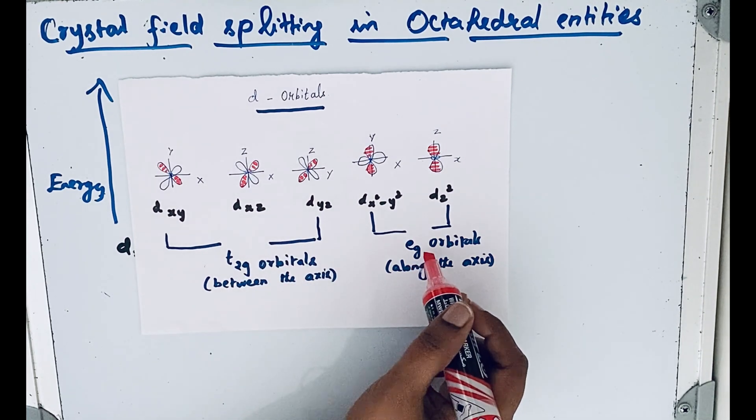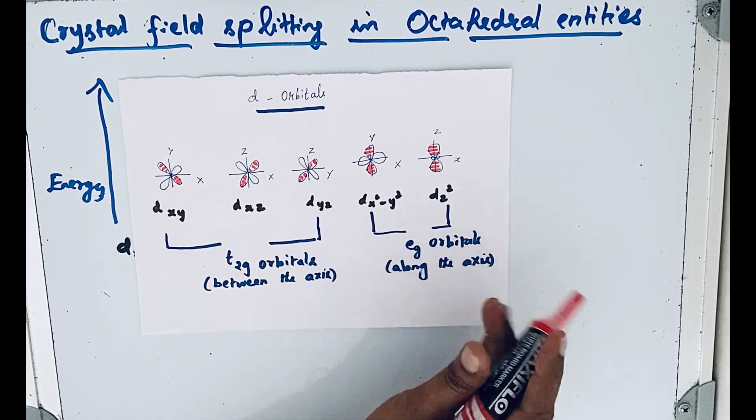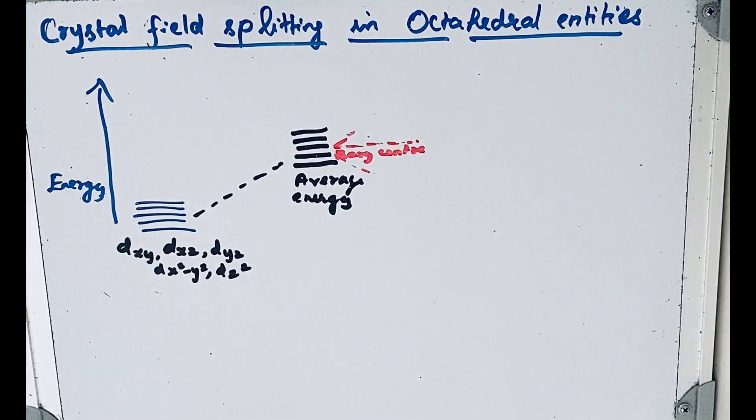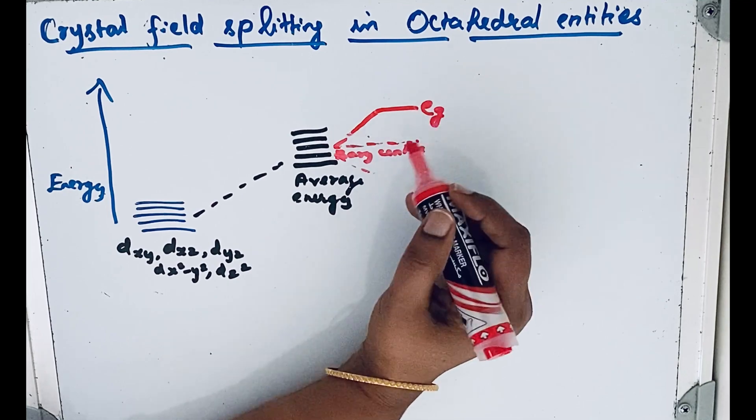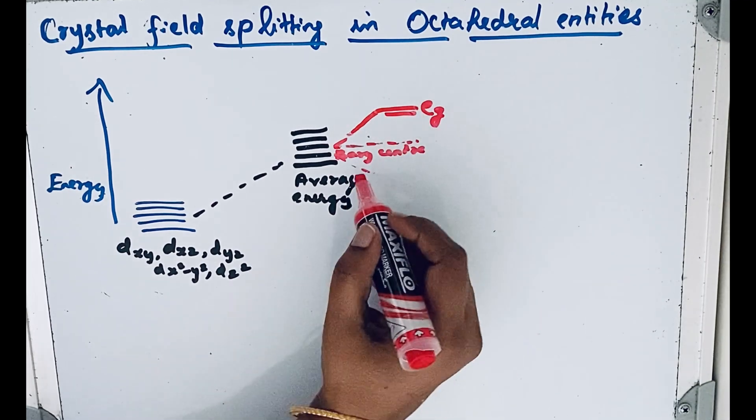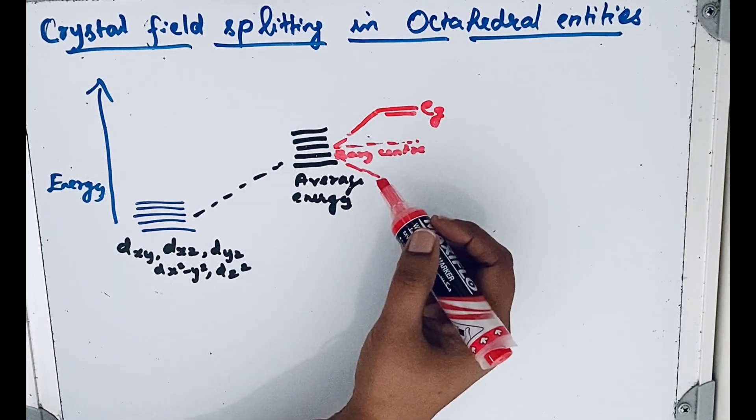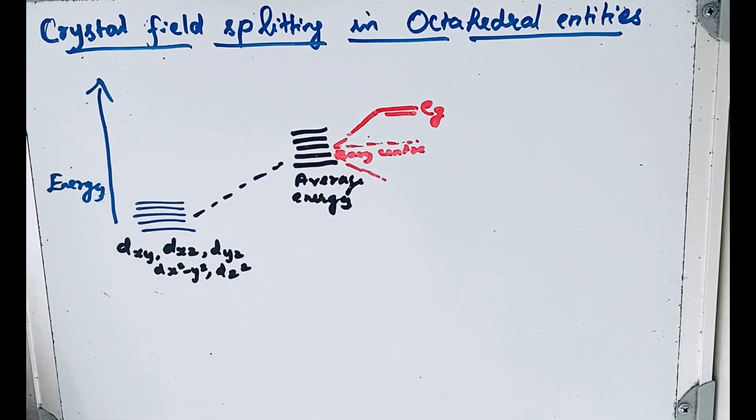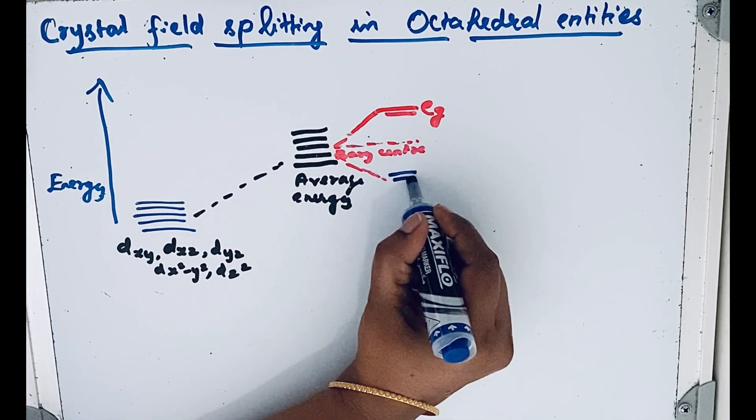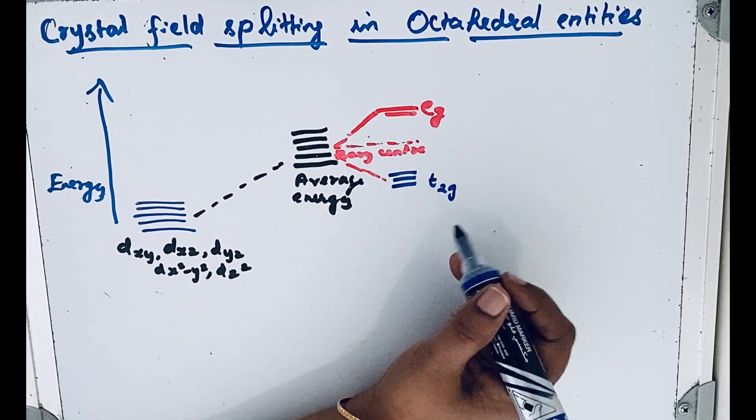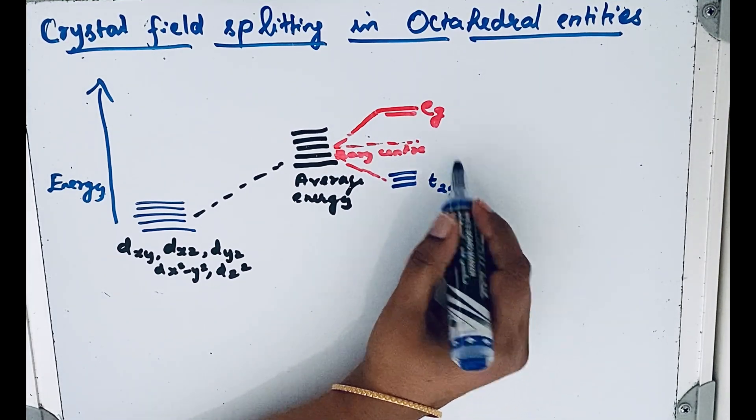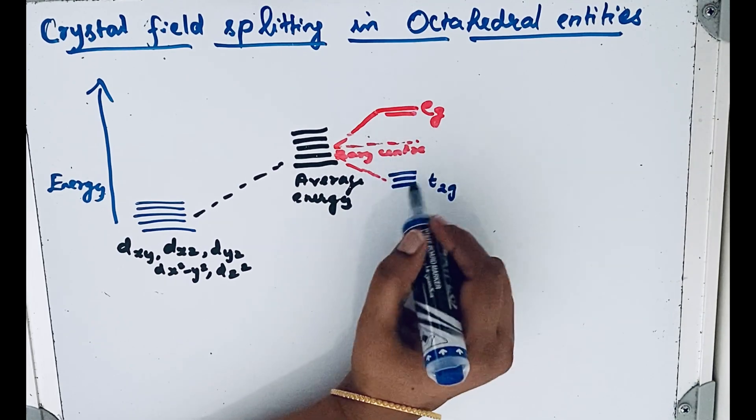The eg orbitals are doubly degenerate orbitals. Now, these eg orbitals get more energy, while the triply degenerate orbitals get less energy. So how many orbitals are down here? Three orbitals—1, 2, 3 t2g orbitals. Here, 'g' stands for symmetrical.